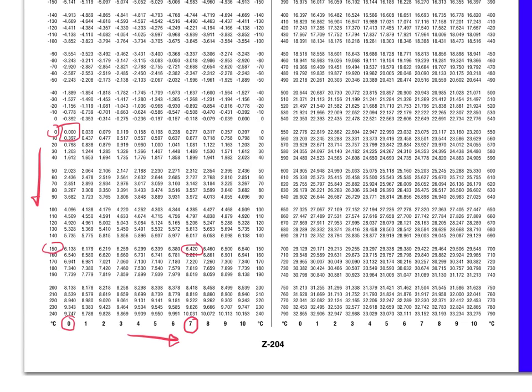You can also notice from the thermocouple table here that any temperature measured below the reference temperature, or in this case, if our reference temperature is zero degrees Celsius, any temperature below that will result in negative voltages, whereas any temperature that's measured above the reference temperature will result in positive voltages.